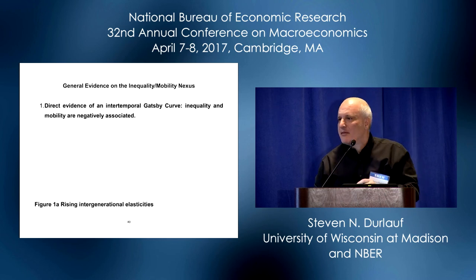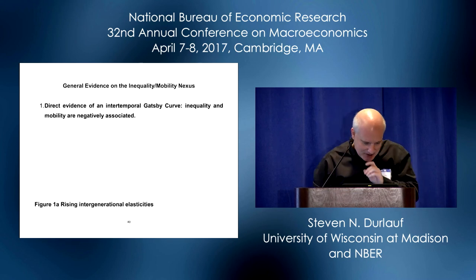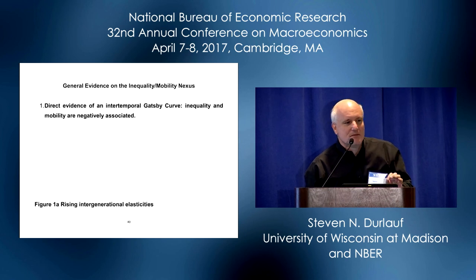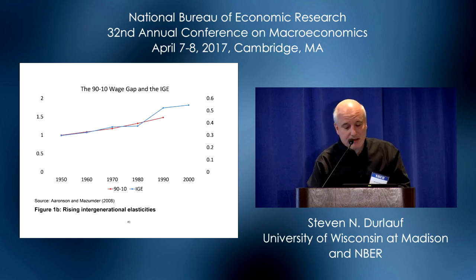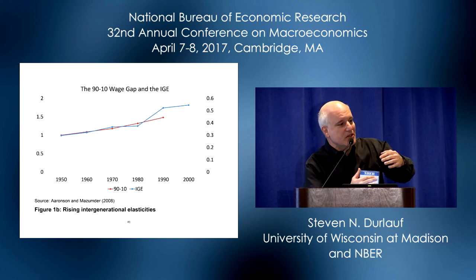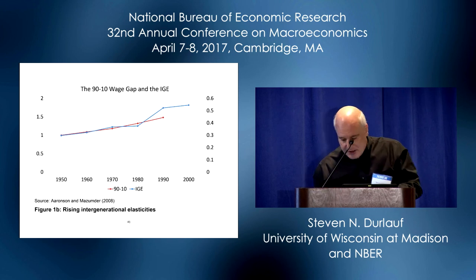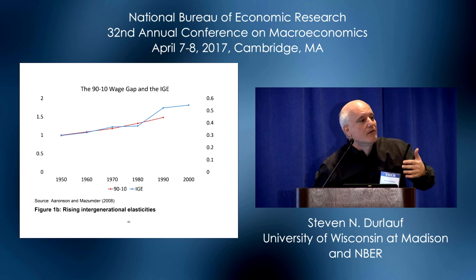What do I mean by evidence in favor of the proposition? There are three propositions I want to put on the table. The first is that there actually is some evidence of a Gatsby curve — looking at the intertemporal Gatsby curve. If you take work with Bhash Mazumdar, what he and Daniel Aaronson and co-authors have established is some relationship between the 90-10 wage ratio and changes in measures of persistence across time. The paper reproduces some thought experiments in the Mazumdar-type work, all of which are direct suggestions of a Gatsby curve.